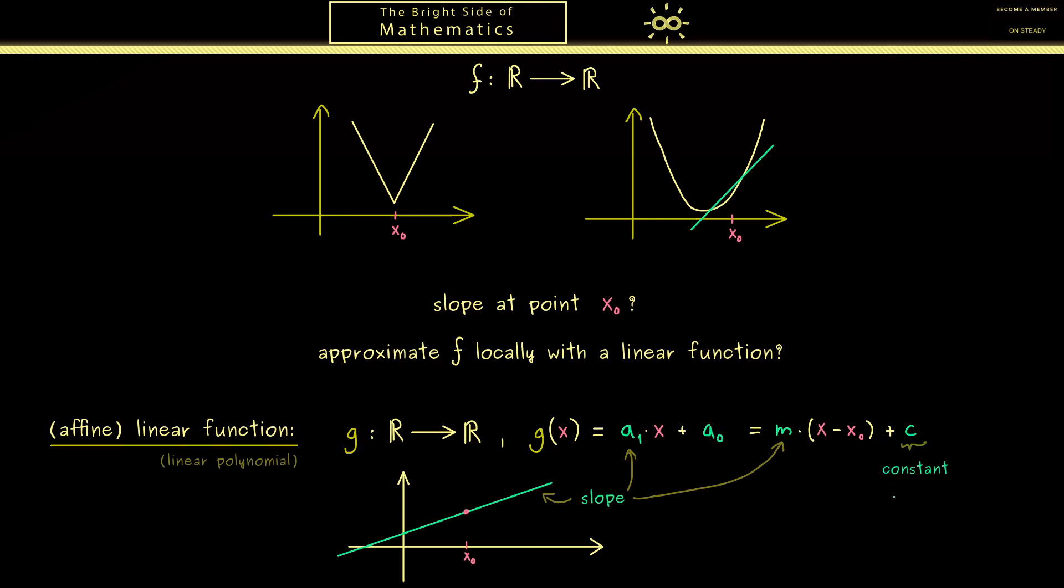Indeed we get that this constant is equal to the value of our function g at the point x0. That's what we can immediately verify when we put in the point. This whole thing is an important representation of our linear function you really should remember. You see this because we can use it to get immediately a formula for calculating this slope. In order to do this let's subtract the constant and divide by (x minus x0).